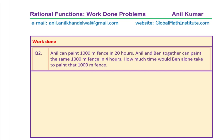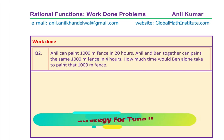Now let us look into the second example. Anil can paint a 1000-meter fence in 20 hours. Anil and Ben together can paint the same 1000-meter fence in 4 hours. How much time would Ben alone take to paint the 1000-meter fence? The job is fixed — we want to paint 1000 meters — and the units are in hours.